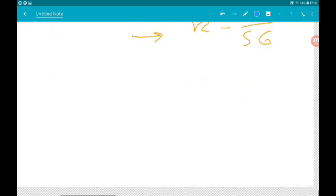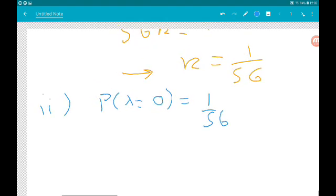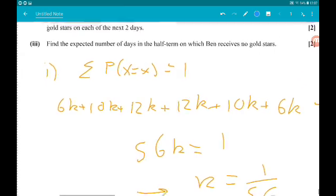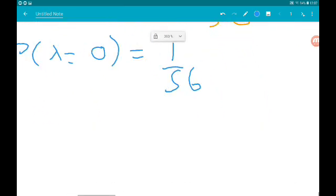Okay, so we need to work out that our probability was 6k, so that's 1 over 56 times 6, which is 6/56.